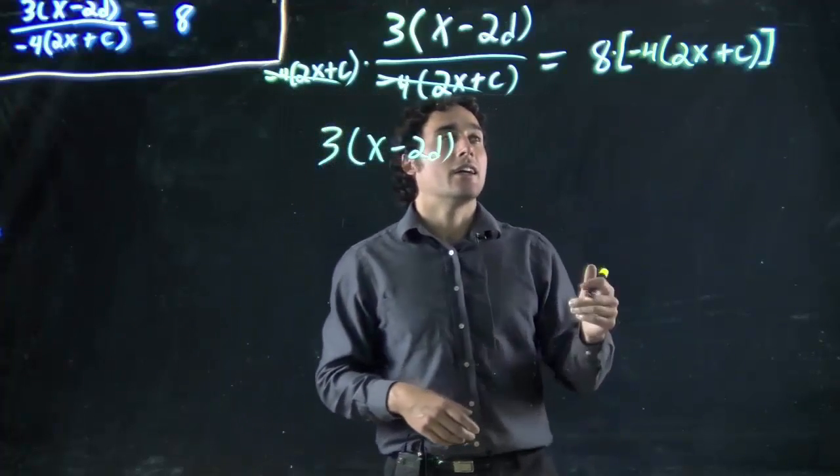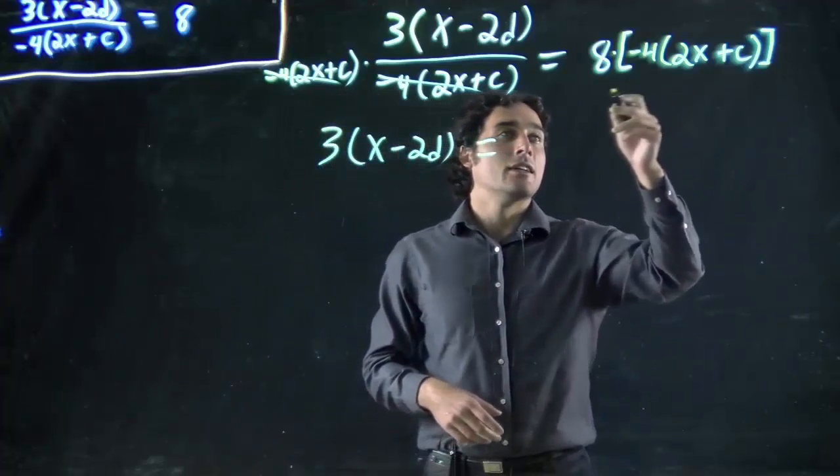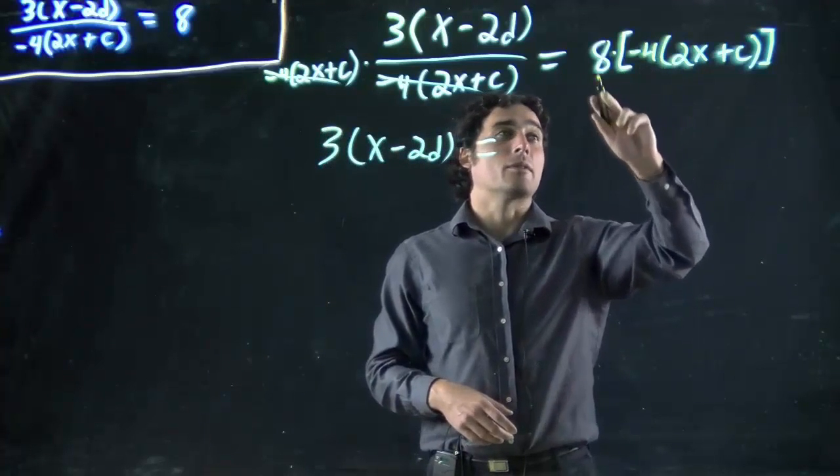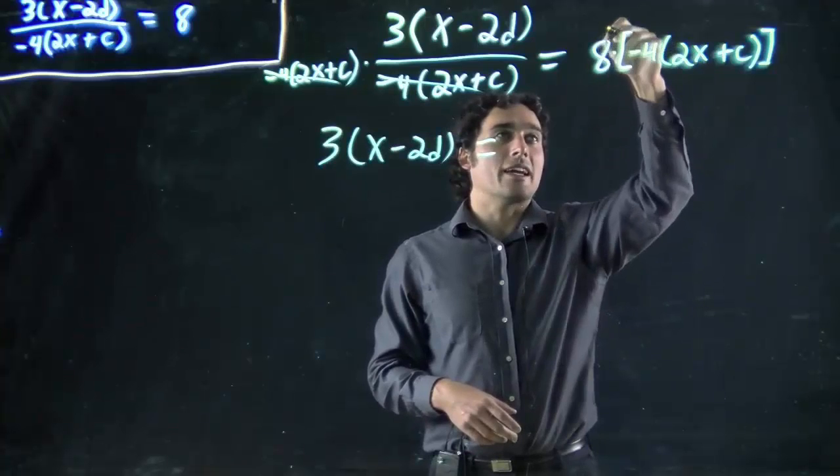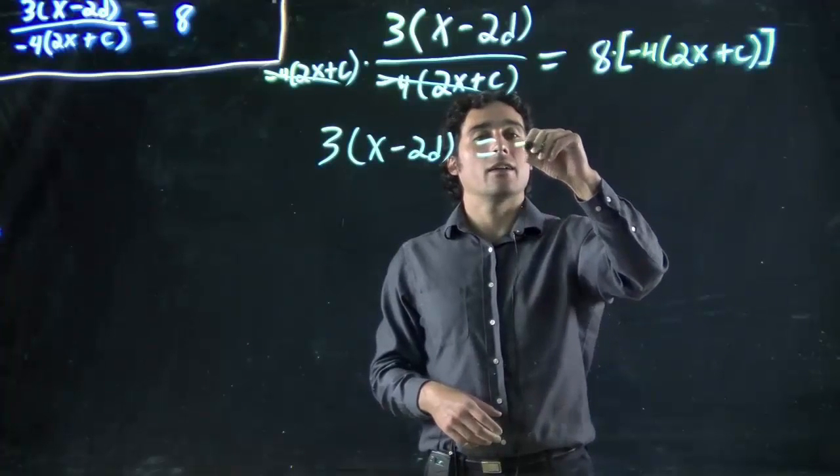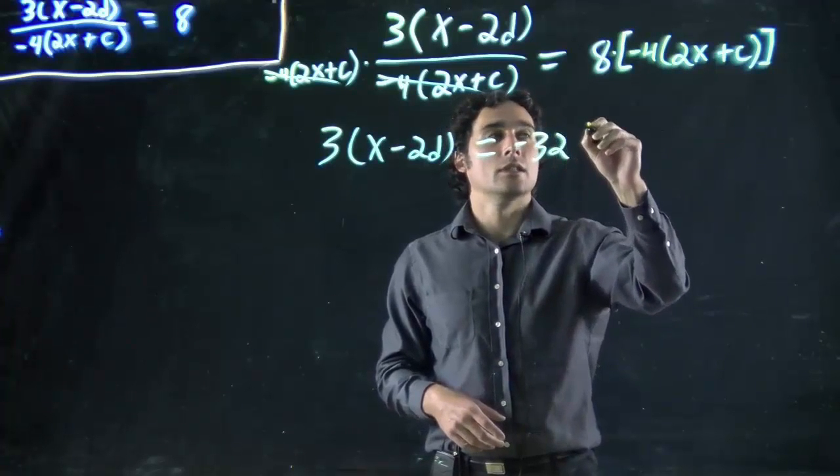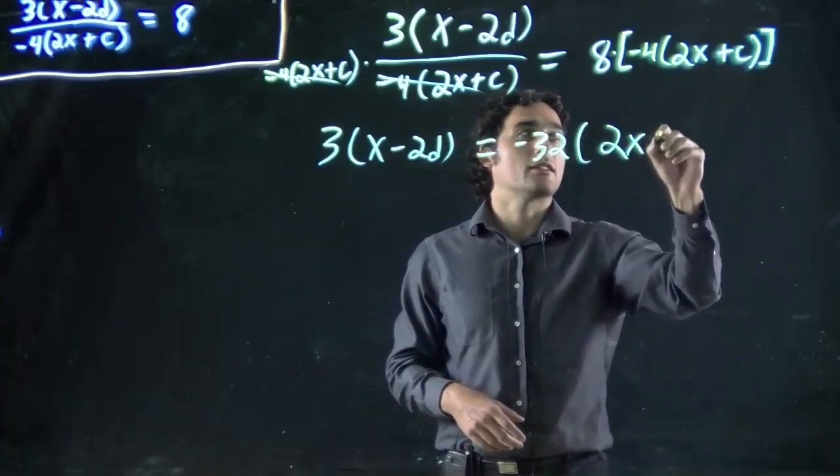What do I got on the other side? I've got 8, and I can multiply this in, remember. It doesn't matter what order, so I can multiply 8 times 4 and get minus 32 times this bracket.